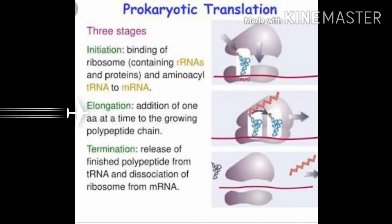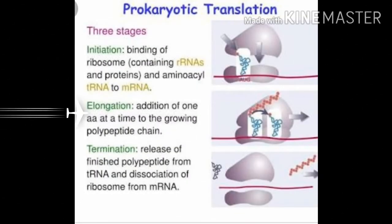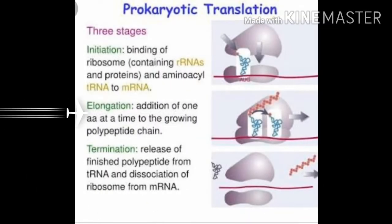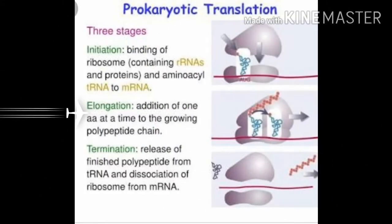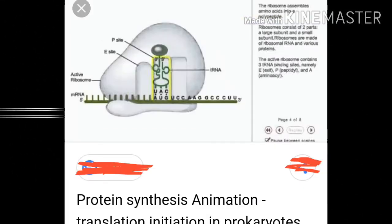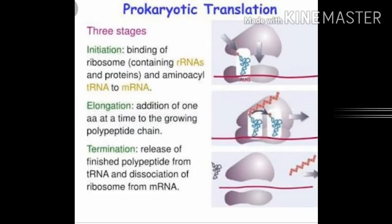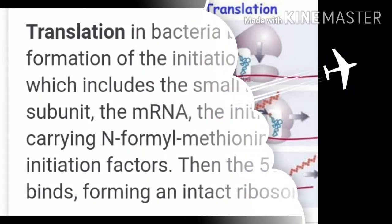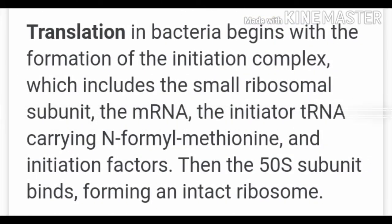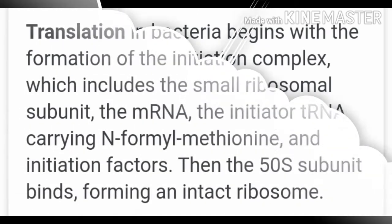There are two main sites in the large subunit: the P-site and the A-site, for subsequent amino acids to bind and to be close enough for the formation of a peptide bond. The small subunit with the transfer RNA attaches to the large subunit such that the initiation codon AUG comes to the P-site, and protein synthesis starts.